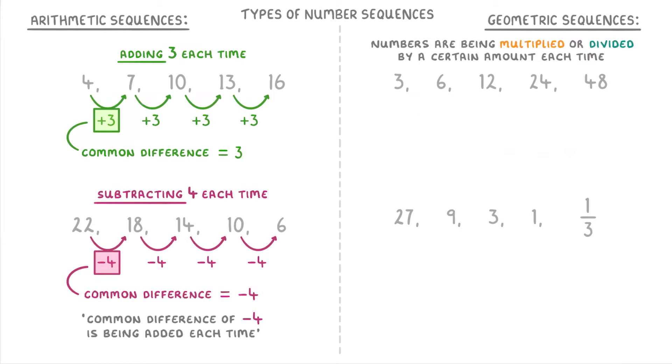To check if it's a geometric sequence we need to instead see if it's being multiplied or divided by anything each time. To get from 3 to 6 we have to multiply the 3 by 2, and to get from 6 to 12 we have to multiply it by 2 again, so the pattern seems to be that we multiply it by 2 each time. For geometric sequences we call this value the common ratio rather than the common difference, so for this example we'd say the common ratio is 2.